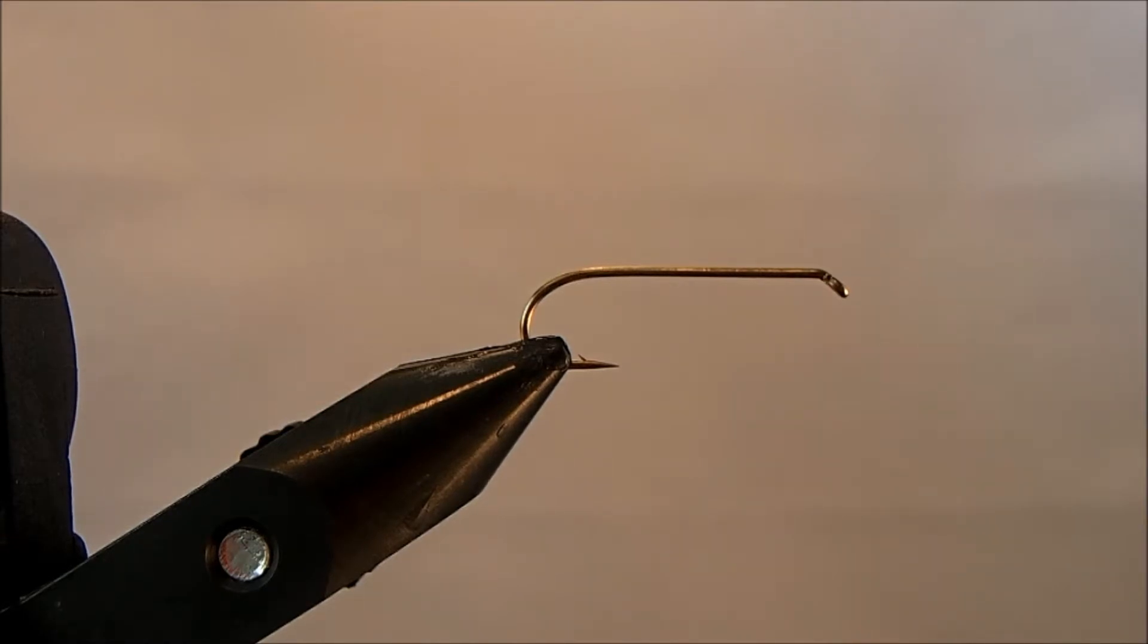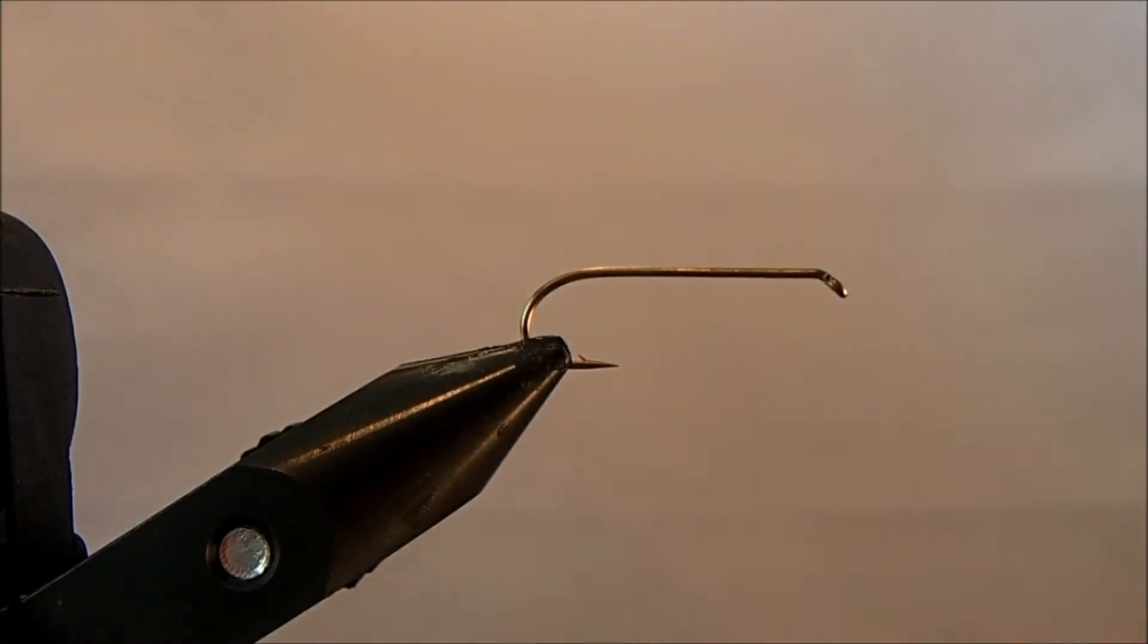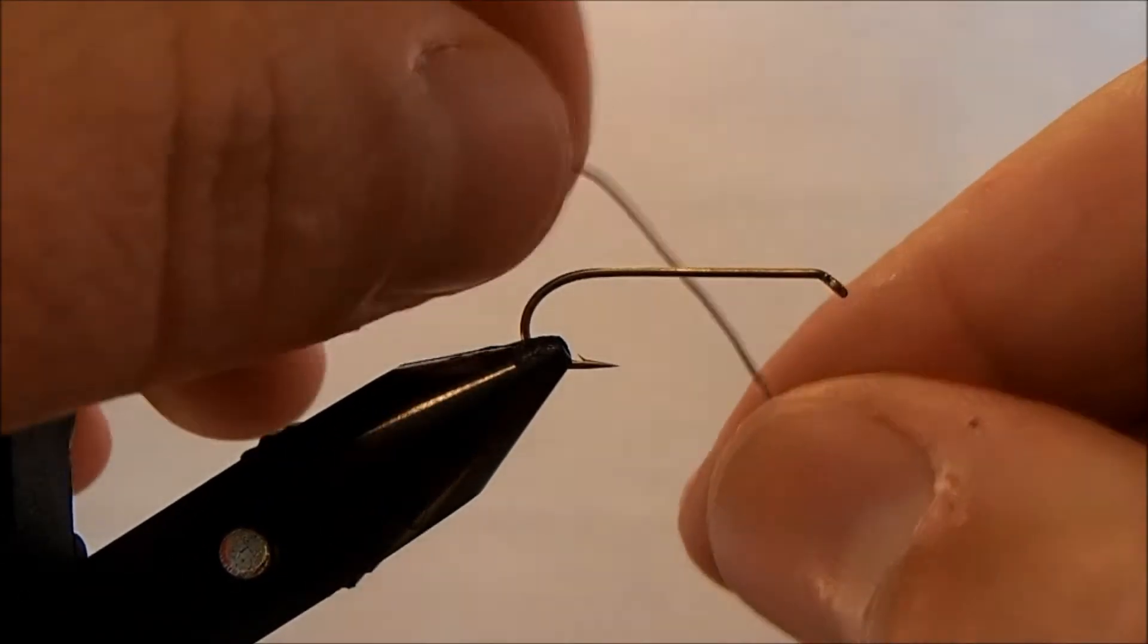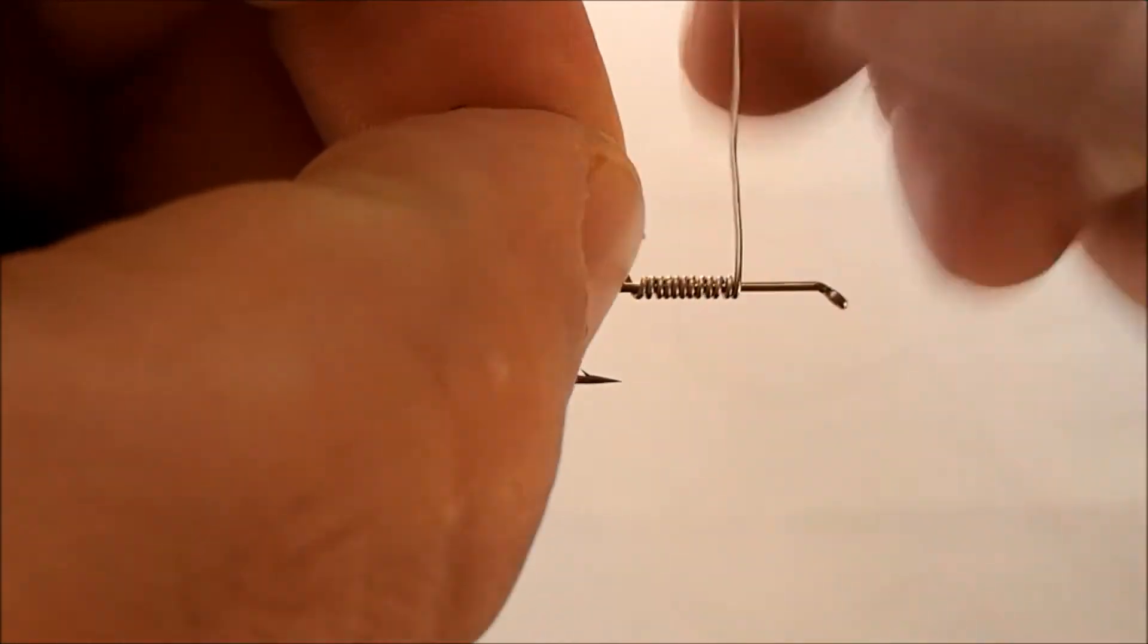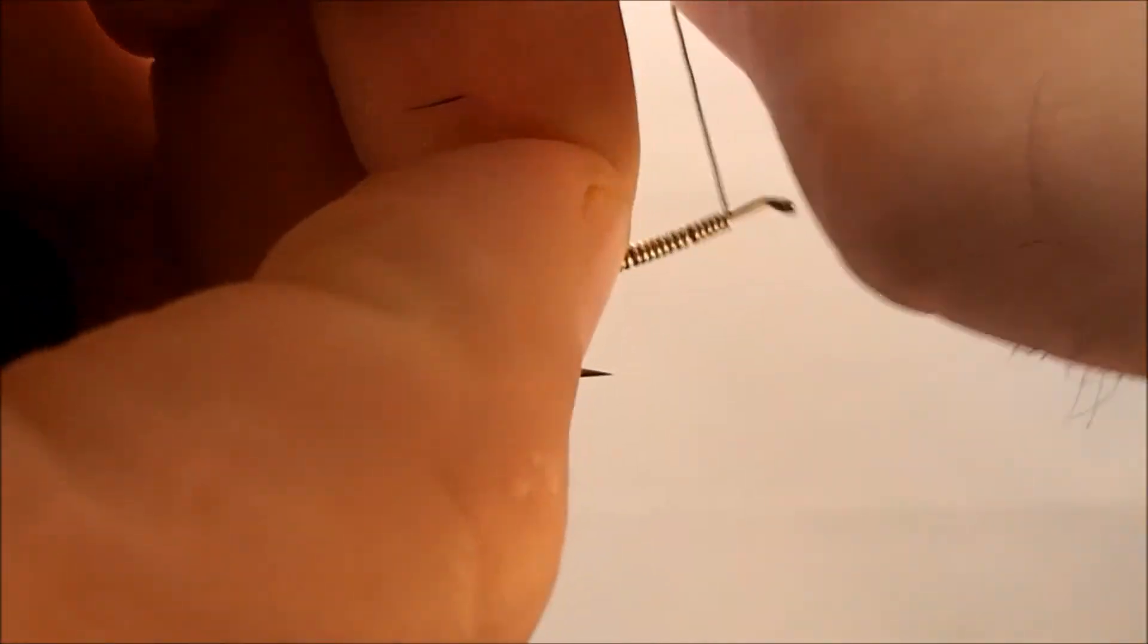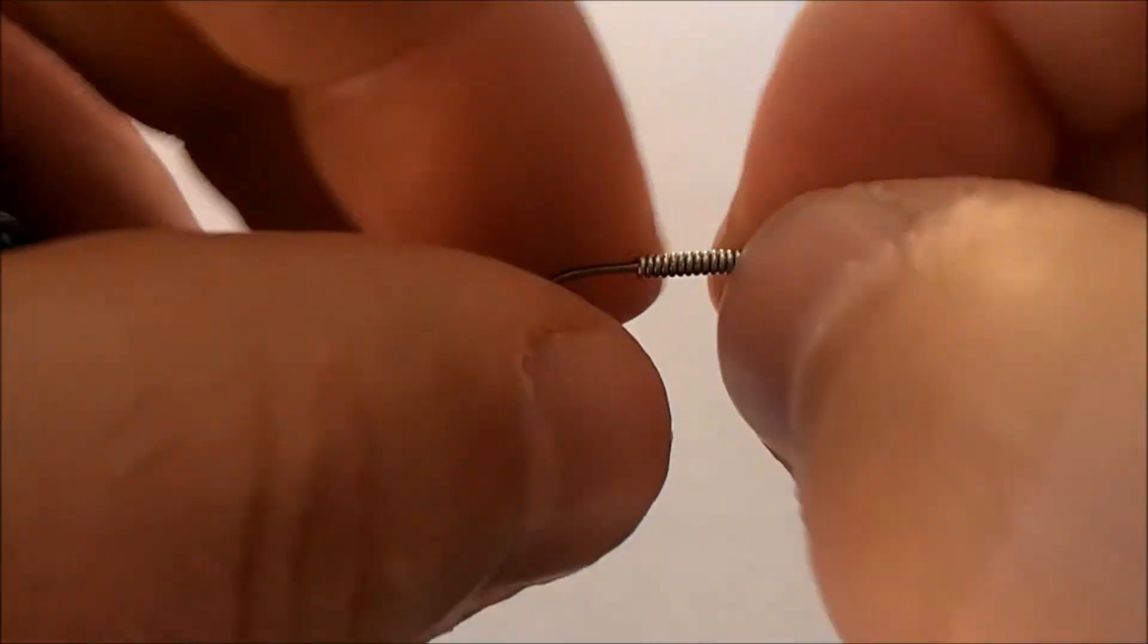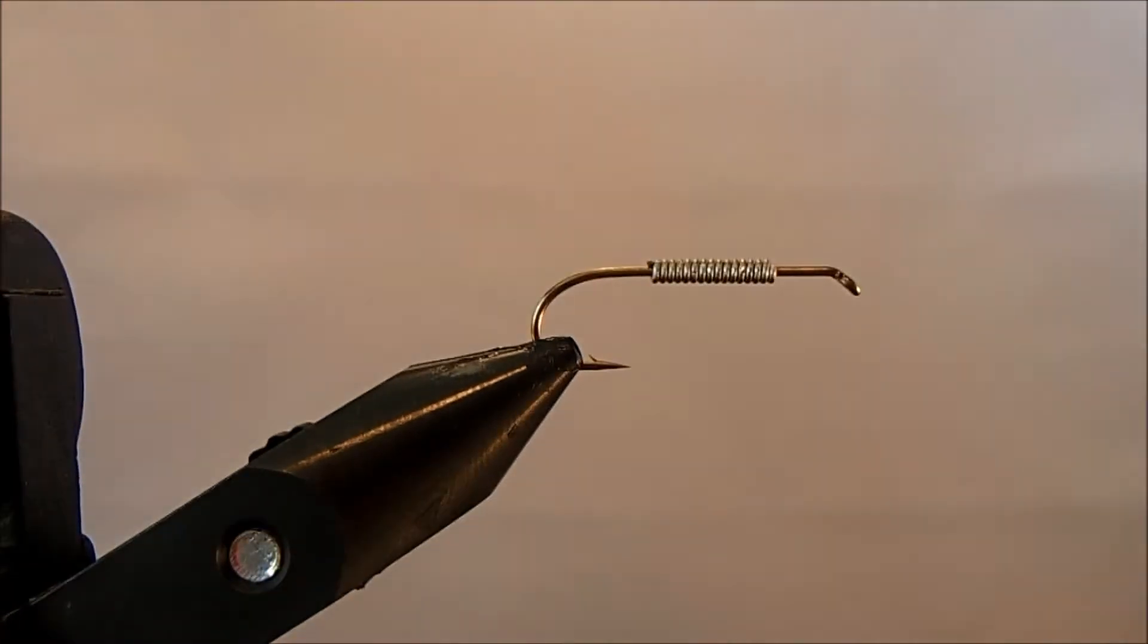This fly is the rubber leg stone and I'm starting off with a size 10 streamer hook. I'm going to make this fly heavier so I'm going to add some lead to it. It's about 15 wraps of lead and I'm going to position it right in the center of the hook shank. The thread that I'm going to use is a 70 and this is a fire orange.